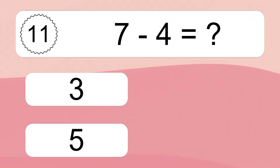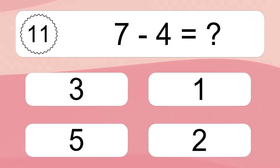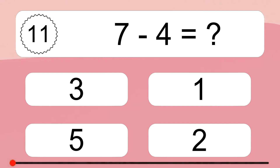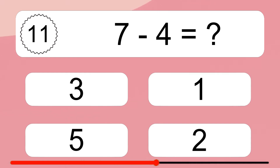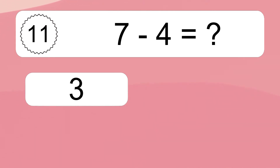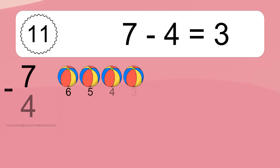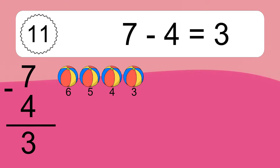7 minus 4 equals what? 7 minus 4 equals 3. Let's count it. 6, 5, 4, 3.